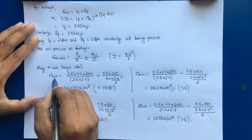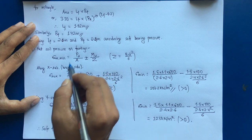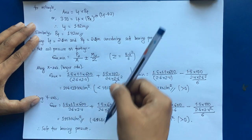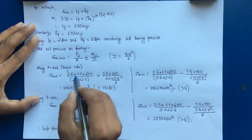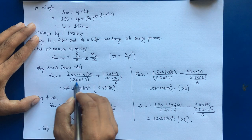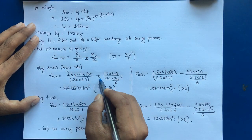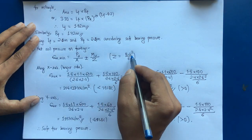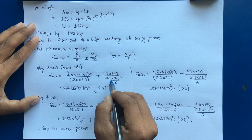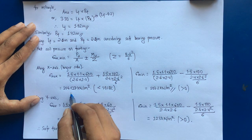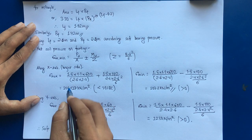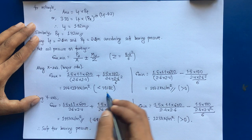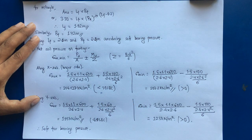Along the longer side: σ_max = 1.5 × 1.1 × 600 / (2.6 × 2.4) + 1.5 × 100 / (Bf × Lf² / 6). Here Bf = 2.4 and Lf = 2.6, giving σ_max = 214.127 kN/m². This is the factored value and must be less than 1.5 × SBC = 1.5 × 200 = 300 kN/m². The condition is satisfied.